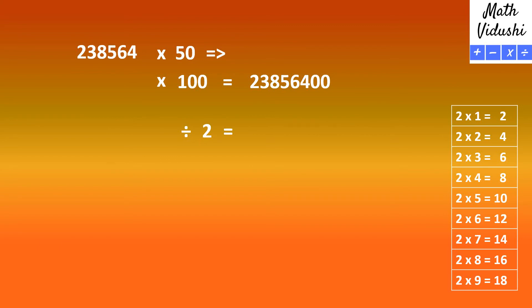Then divide the answer by 2 to get 11928200. So 238564 multiplied by 50 is 11928200.